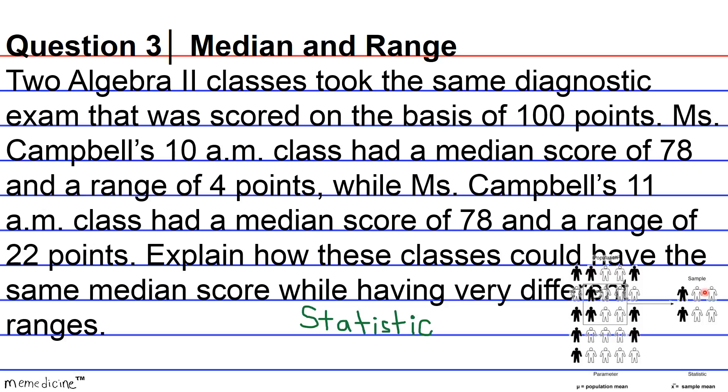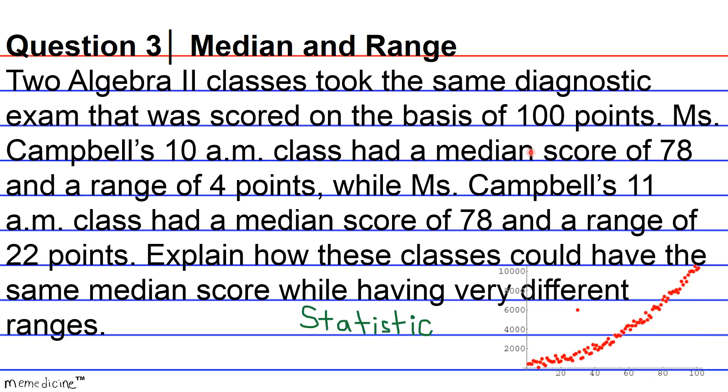The median now is going to be the middle number. And the reason why the median is important is because it's more representative of the central value of a group of data sets, especially if there are outliers. As we see is the case here, outliers being extremely high values or extremely low values that don't really correlate with the rest of the data set.